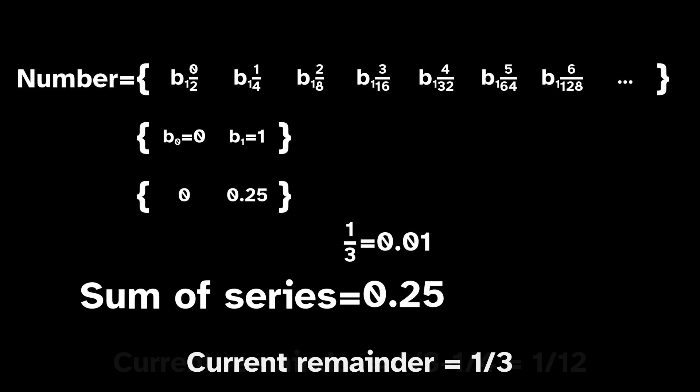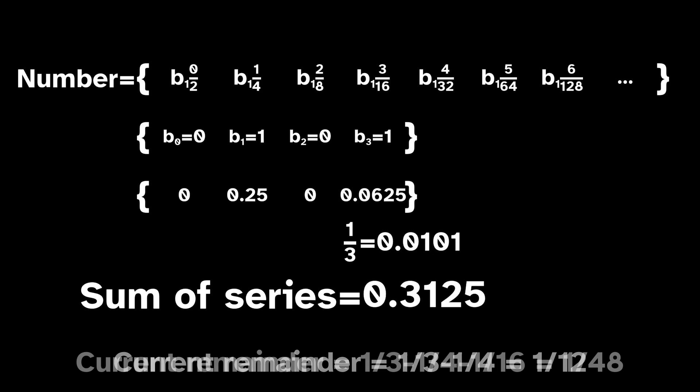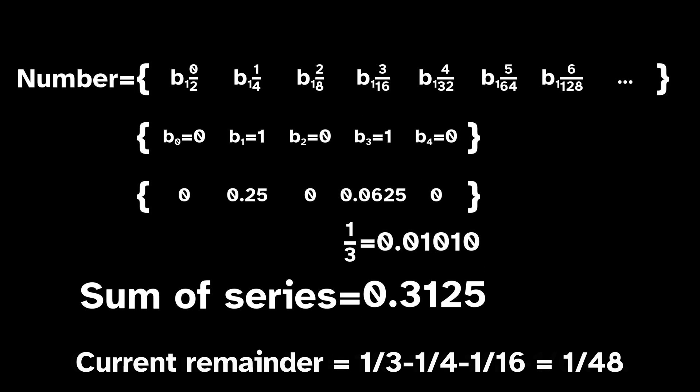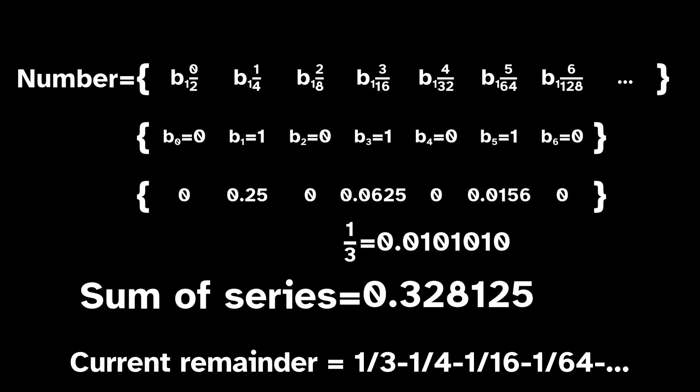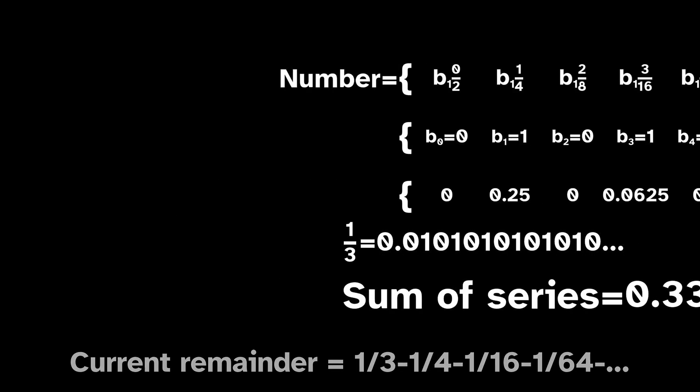We subtract 1 quarter from 1 third and get 1 twelfth. That's less than 1 eighth, so the third binary digit is 0. But it's more than 1 sixteenth, so the fourth binary digit is 1, and so on. This is 1 third in binary.